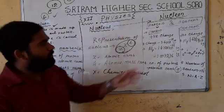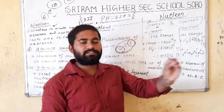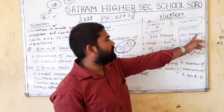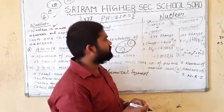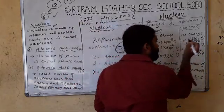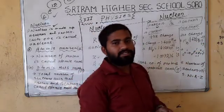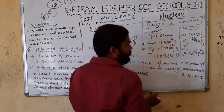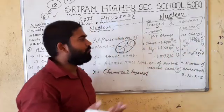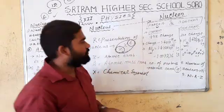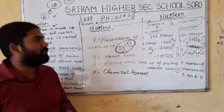Now let us talk about the neutron. Neutron is neutral — it does not contain any charge. So we can say neutron has no charge. The mass of the neutron is slightly greater than that of the proton. The mass of the neutron is 1.6749 × 10⁻²⁷ kg. Comparing the two: mass of proton is 1.6726 × 10⁻²⁷ kg, but mass of neutron is 1.6749 × 10⁻²⁷ kg, so there is a slight variance. In atomic mass units, the mass of the neutron is 1.008665 U.